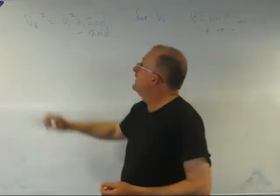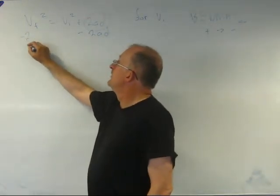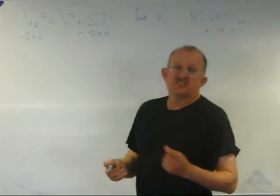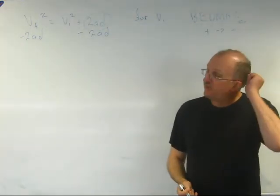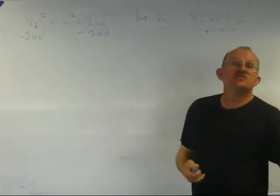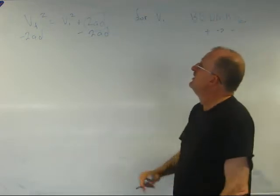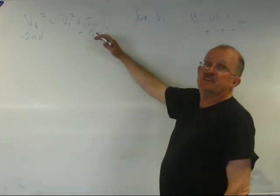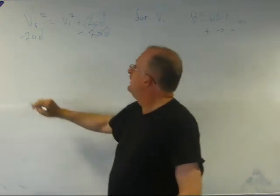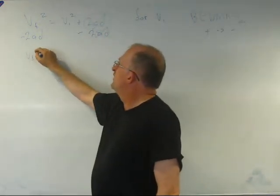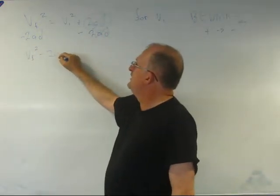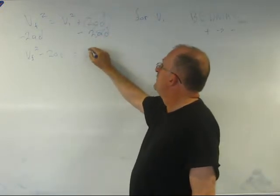I also must subtract that blob from the left-hand side, because the third rule says what we do to one side we must do to the whole of the other side. So these cancel. We add and then subtract the same one and they go away. So Vf squared minus 2ad equals Vi squared.